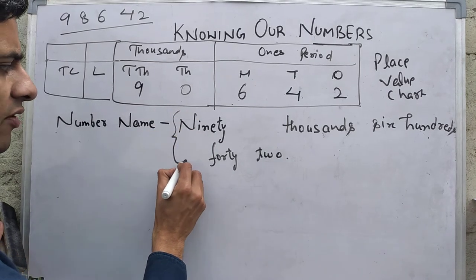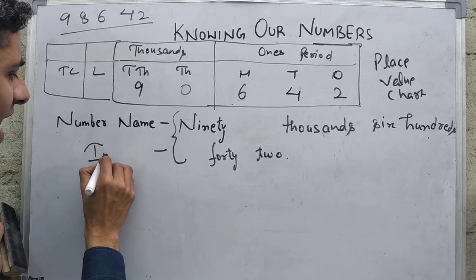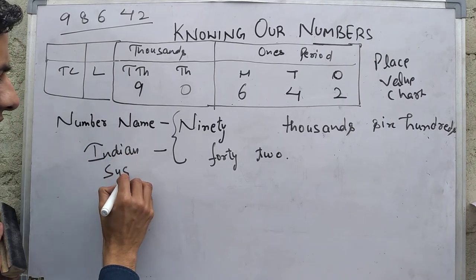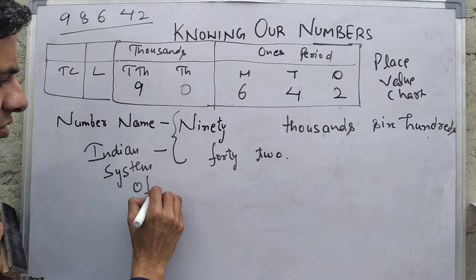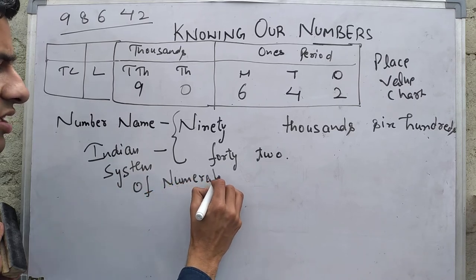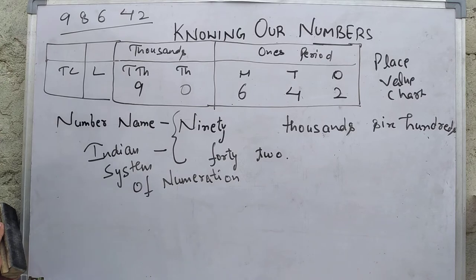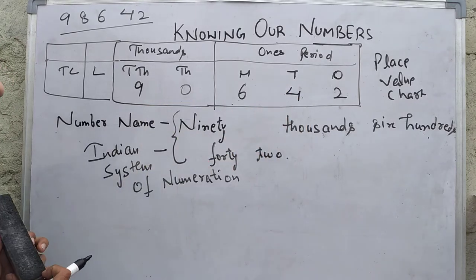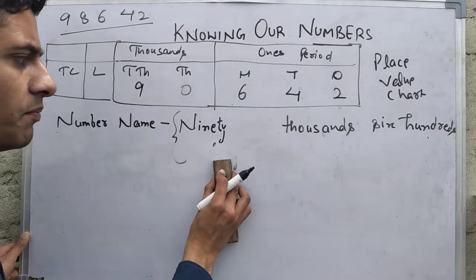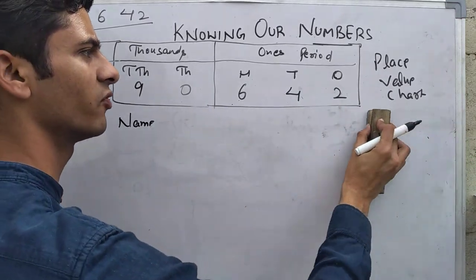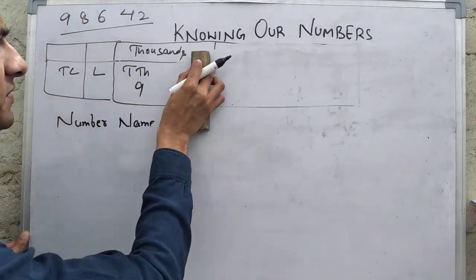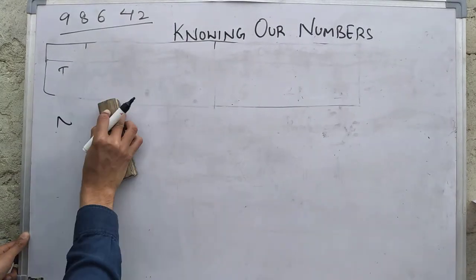This system of numeration is called the Indian system of numeration. For any number, you can write its number name. But if you are given the number name and you want to write the number for it, then how do you proceed? Suppose you are given a number name.